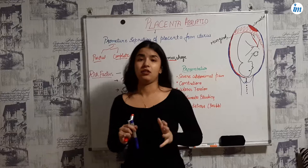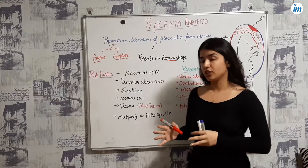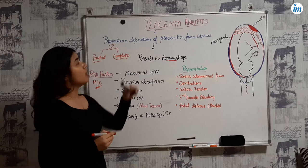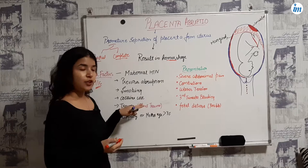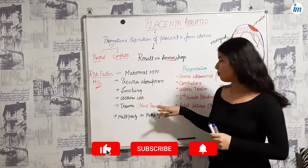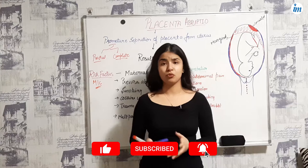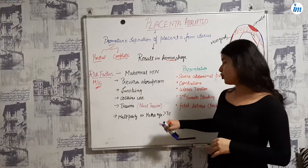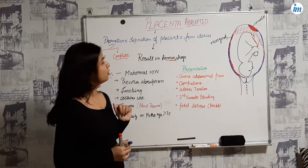Now what are the risk factors mainly responsible for this? It can be maternal hypertension. One of the most important factors is previous abruption — this is the most common factor for placenta abruptio. Smoking can also lead to placenta abruptio, as well as cocaine use and trauma, mainly blunt trauma due to a car accident or domestic violence. Multiparity and maternal age more than 35 years can also be reasons for placenta abruptio.